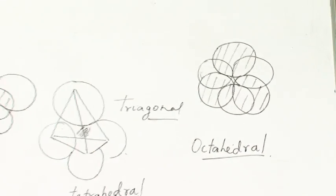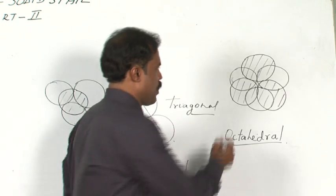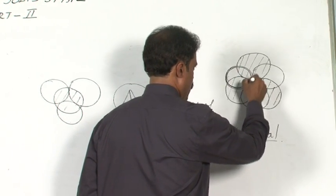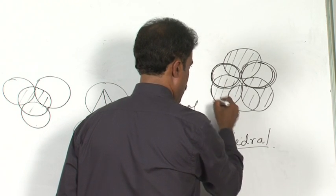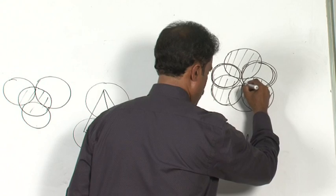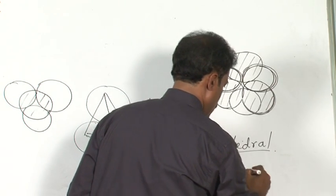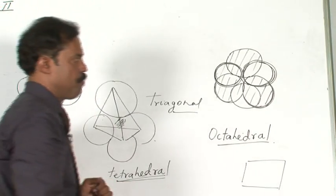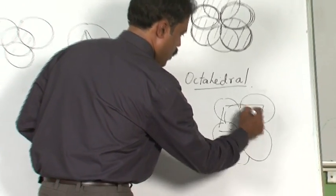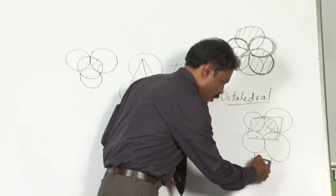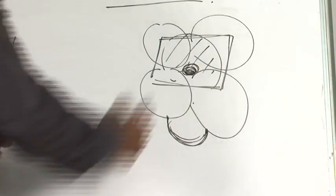It is a little difficult to understand why this void is called octahedral, so let me explain. Consider four spheres making a plane, with one sphere at the bottom and one at the top — this gives a tetrahedral or octahedral arrangement. Four spheres in one plane, one at the bottom, one at the top: the void created is called octahedral void.